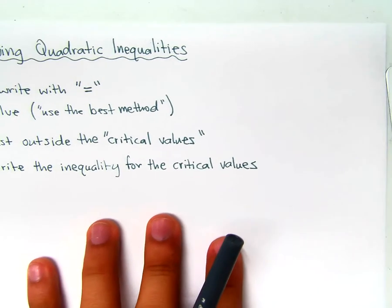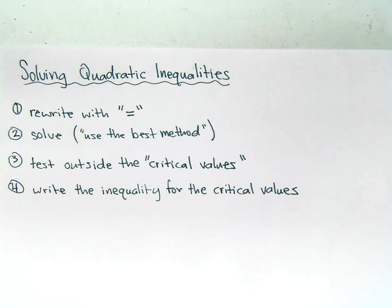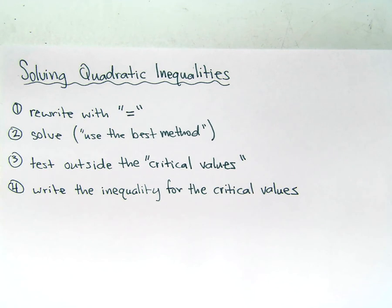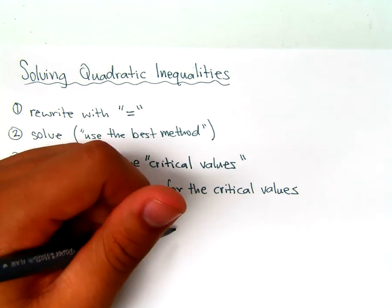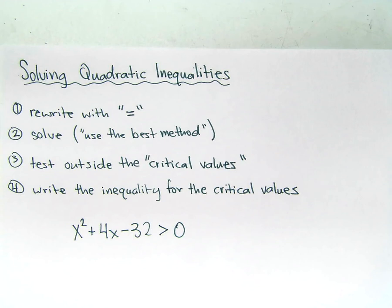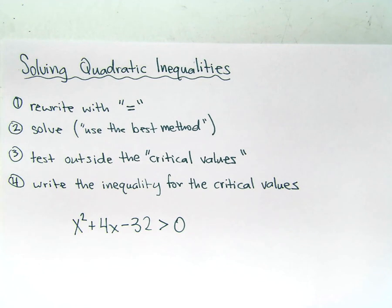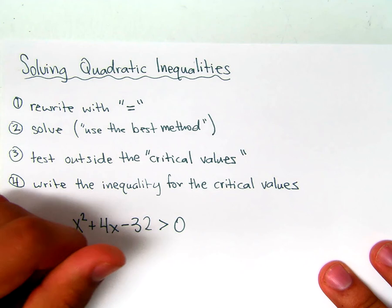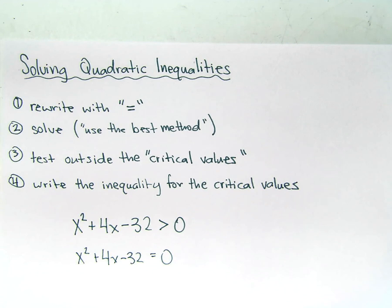The only thing that's really new today is when we solve quadratic inequalities algebraically — not by graphing, but by algebra. Let's say we're given the equation x squared plus 4x minus 32 is greater than zero. The first step is to rewrite it with the equal sign, so you get x squared plus 4x minus 32 equals zero. We've been solving quadratic equations for the last week or two, so we can use any of the methods. Anytime we have a trinomial, factoring works best when we can factor, and the quadratic formula always works.